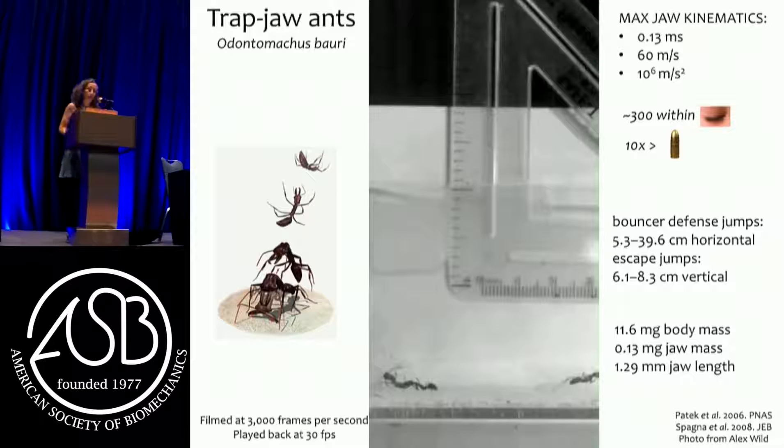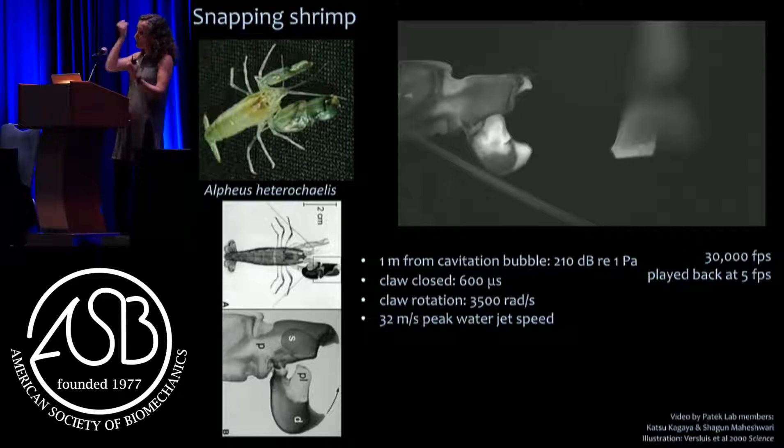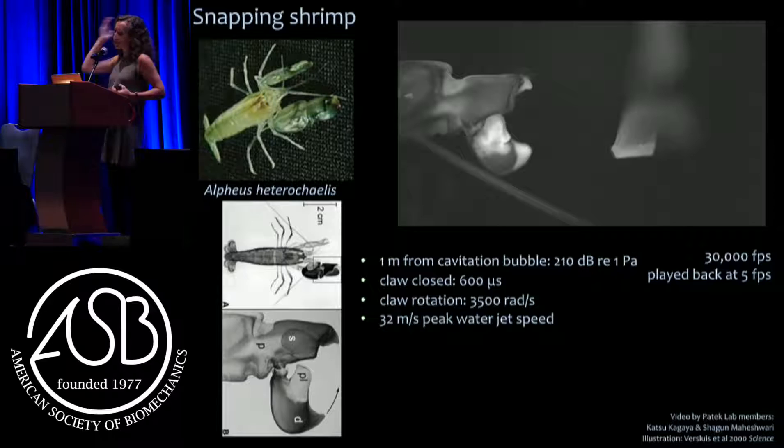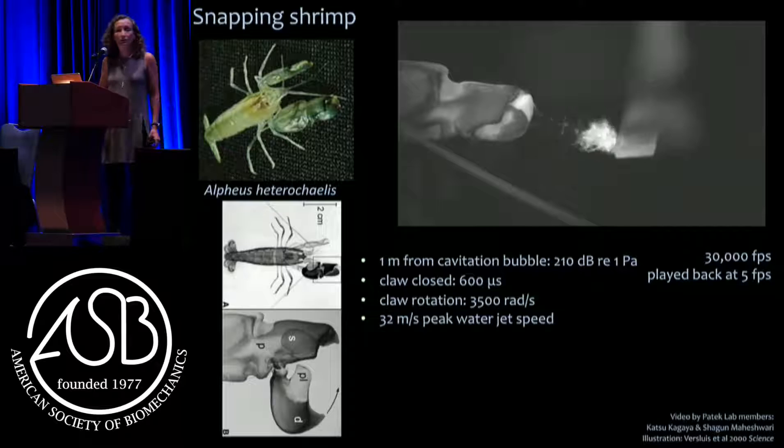Another example is snapping shrimp. Snapping shrimp store energy through a slow muscle contraction trying to close their claw. There are two adhesive patches that serve as the latch. When they break apart, the claw slams closed and generates such a fast jet of water that the water vaporizes behind it in a cavitation bubble. When these bubbles collapse, it sets off a huge implosion that knocks out their prey - and they also fight with it.